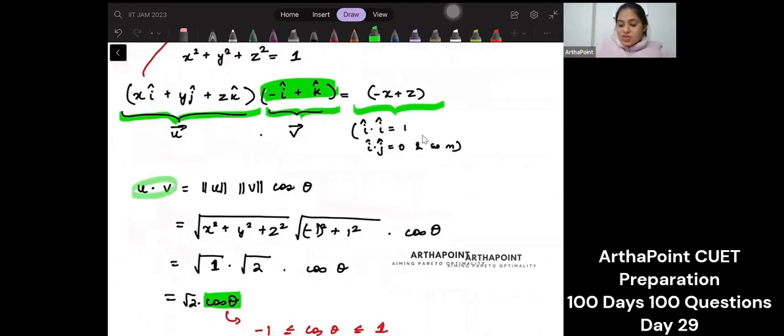But we have this rule that the dot product of two things, two vectors, is magnitude of the first vector into magnitude of the second vector into cos theta.